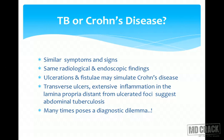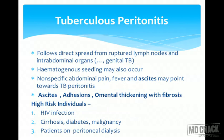A common diagnostic dilemma is distinguishing tuberculosis from Crohn's disease. Earlier it was said that Crohn's disease occurs in the west and tuberculosis in the east, but they have similar signs radiologically and clinically — ulcers and fistulae look the same. However, ulcers in Crohn's disease are much deeper, and while transverse ulcers are common in both, extensive inflammation proximally is more characteristic of tuberculosis. Histopathology may help in diagnosis.